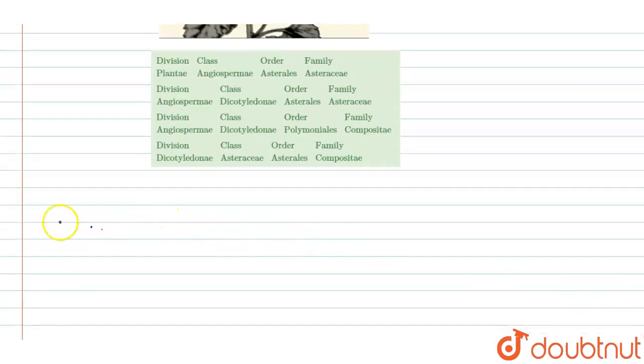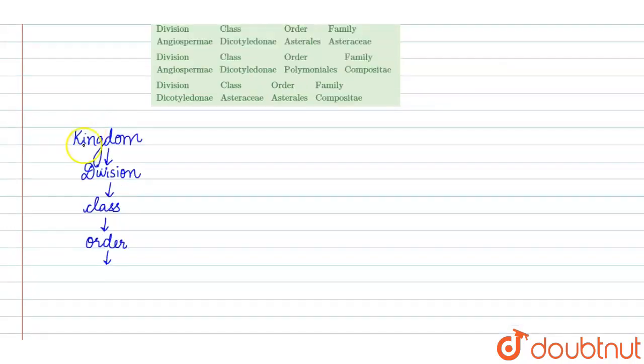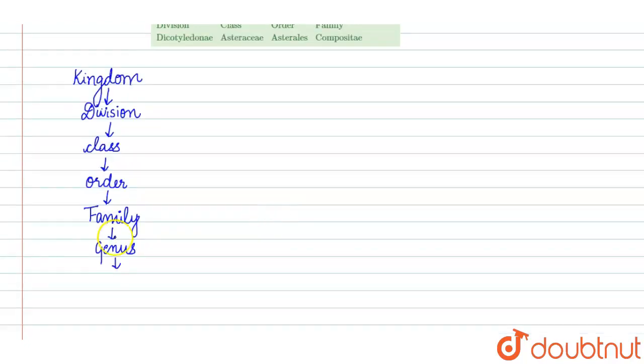According to the taxonomic classification, first comes Kingdom. In case of plants, instead of phylum comes Division. Then comes Class, then Order, then Family, then Genus, and last Species.